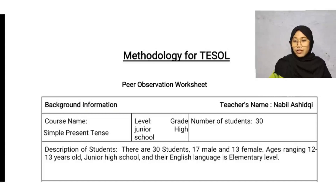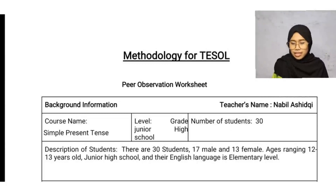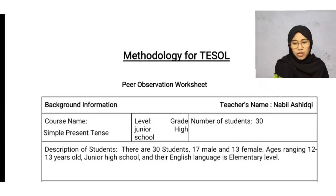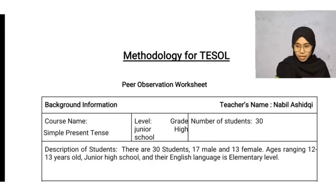For the first, for background information: the teacher's name is Nabil Asidki, the course name is Simple Present Tense, the level is grade junior high school, the number of students is 13, and there are 17 male and 13 female students.